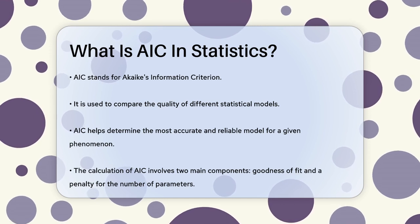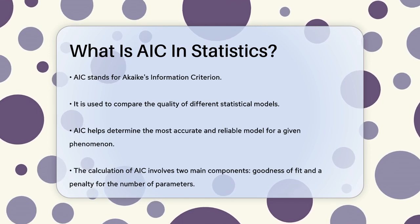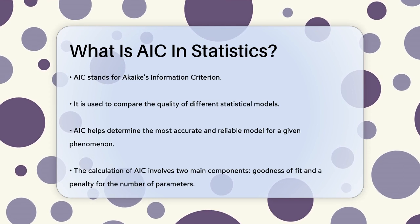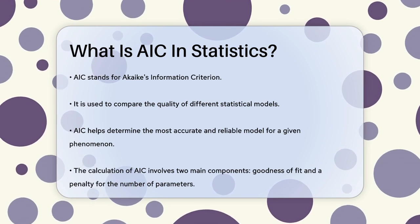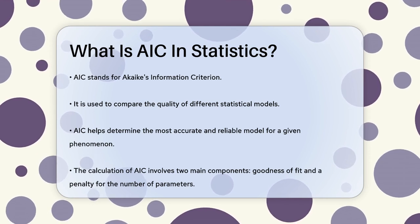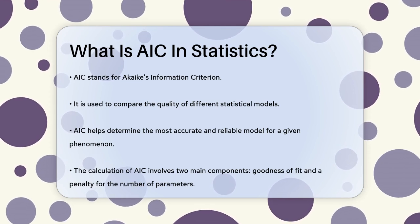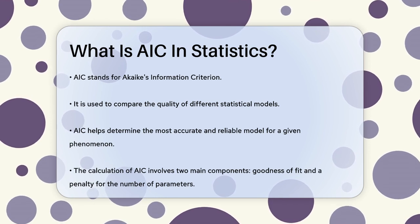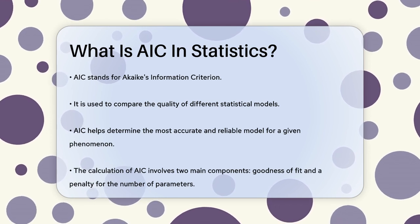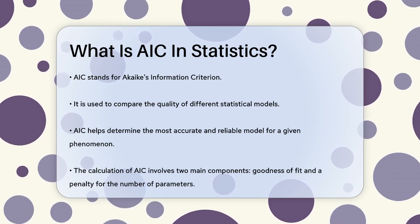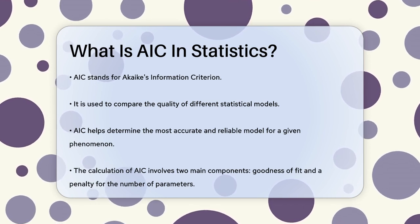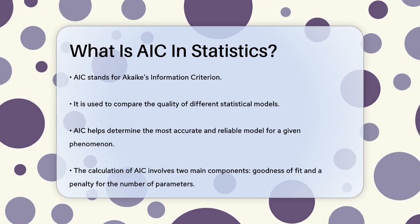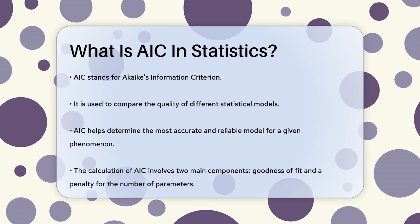AIC, or Akaike's Information Criterion, is a tool used to compare the quality of different statistical models. Imagine you have several models that explain a particular phenomenon, like how different factors influence socioeconomic status. AIC helps you determine which model is the most accurate and reliable.